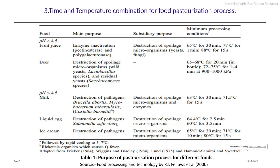The time-temperature combination varies for specific food products. In this table you can see the time-temperature combinations for food products like fruit juices, beer, milk, liquid egg, and ice cream — showing both the LTLT and HTST time-temperature combinations, as well as the basic specific purpose for the pasteurization process.